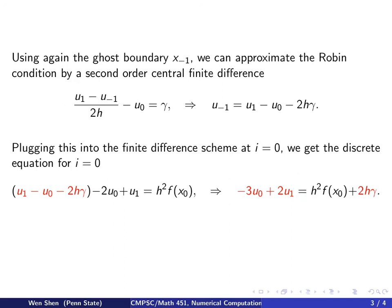Then you can plug this into the finite difference scheme, the discrete Poisson at i equals 0. Plug that in for the term u negative 1, which is this term here, and then u0 and u1. That will be the discrete Poisson operator.